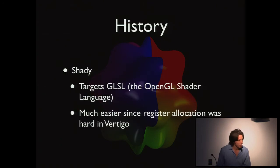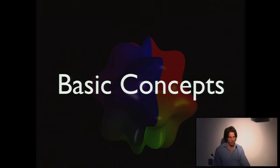Eventually, along came Shady, which instead of generating instructions directly for a GPU, targets GLSL, the OpenGL Shader language. This is much easier to do. One reason is that register allocation was quite hard in Vertigo, but in Shady it's not, because it targets GLSL which has variables, and then it compiles down and does the register allocation.